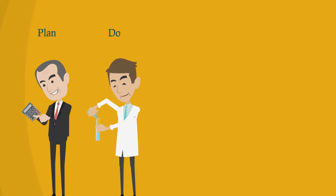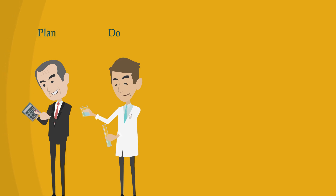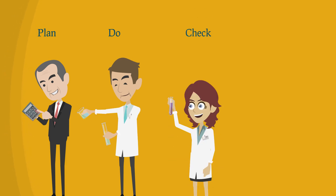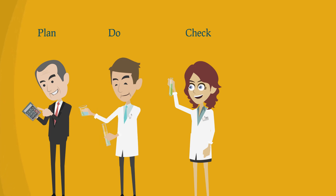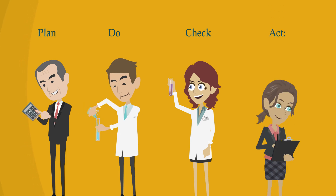Do: conduct the plan in a test on a small scale under controlled circumstances. Check: examine the results of your test and verify if you've improved the process with the help of data. Act: implement the changes that you have verified on a larger scale.